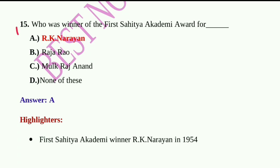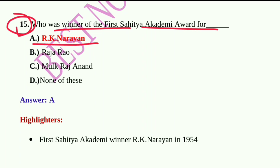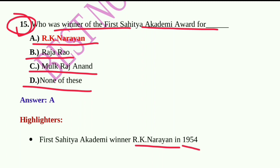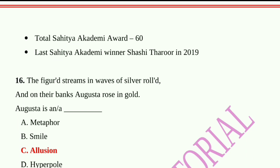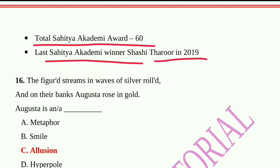Question number fifteen: Who was the winner of the first Sahitya Akademi Award? A) R.K. Narayan, B) Raja Rao, C) Mulk Raj Anand, D) None of the above. R.K. Narayan won the Sahitya Akademi Award in 1954, so option A is correct. In total there are 60 Sahitya Akademi Awards; the last winner was Shashi Tharoor in 2019.